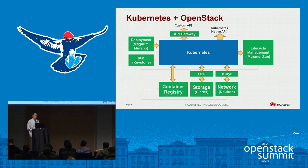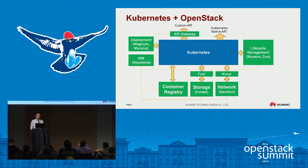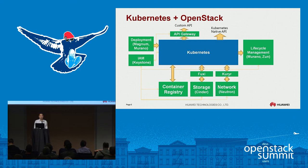We brought this up at the Austin Summit: OpenStack should work nicely with Kubernetes. On the deployment side, OpenStack already supports this — we have the Magnum and Murano projects that you can use to deploy a Kubernetes cluster. Keystone is a really nice component to serve as the IAM layer.